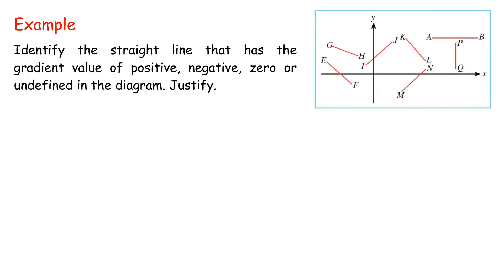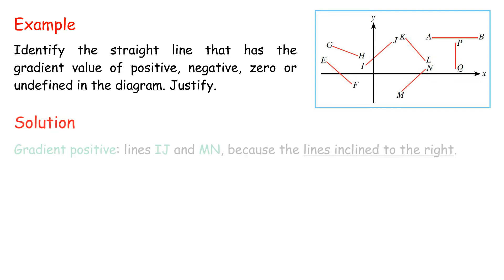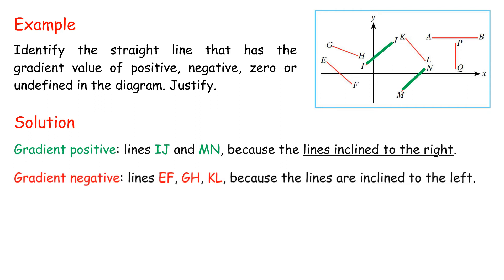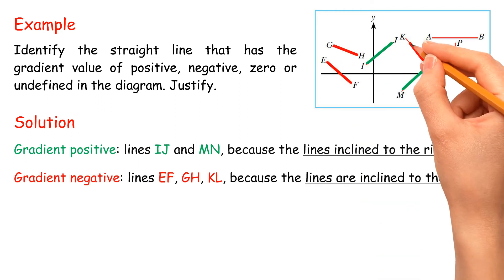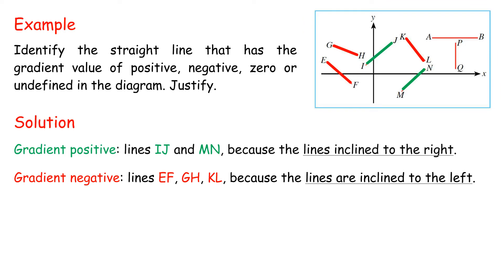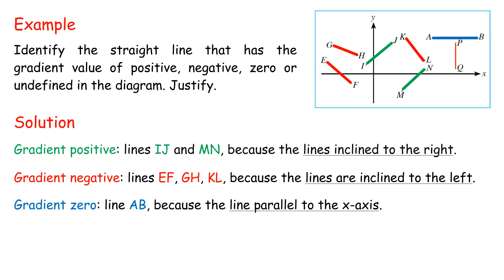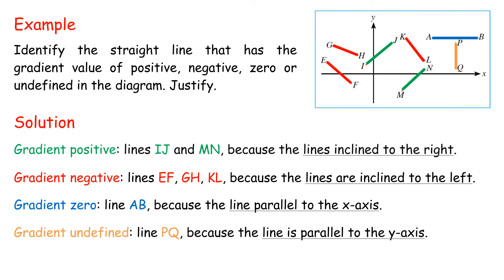Example: Identify the straight line that has the gradient value of positive, negative, 0, or undefined in the diagram. Justify. Gradient of straight lines IJ and MN are positive because the lines are inclined to the right. Gradient of straight lines EF, GH, and KL are negative because the lines are inclined to the left. Gradient of line AB is 0 because the line is parallel to the x-axis. Gradient of line PQ is undefined because the line is parallel to the y-axis.